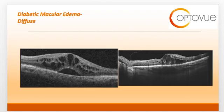Diffuse macular edema is characterized by more widespread vascular abnormalities with larger areas of thickening. Not as many hard exudates, but many more cystic changes within the retina, as you can see on both of these scans. On the left-hand side, you can see that there is also a subretinal or neurosensory detachment indicating the chronicity of the disease and the effect that it's having on the entire retina. On the right-hand side, you can see the diffuse involvement of the cystoid macular edema, again involving the fovea. Thus, this would be an urgent referral.